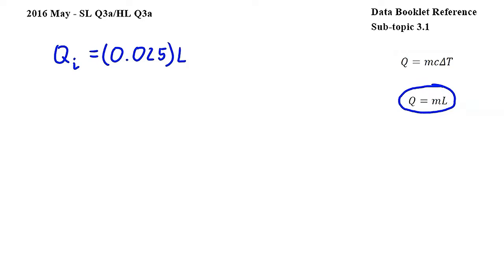After the ice cube has melted, the water resulting from the melting process heats up from 0 degrees to 12 degrees which is the final temperature of the water. To calculate the energy gained during this phase we will use this equation from subtopic 3.1 where Q is energy, M is mass,